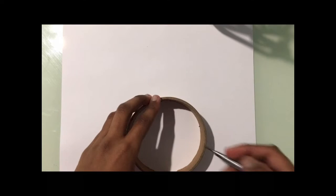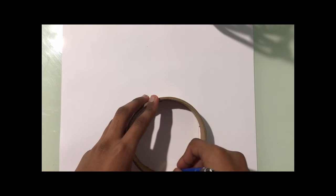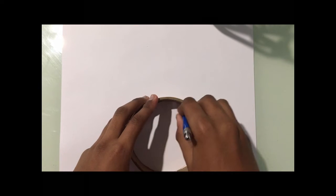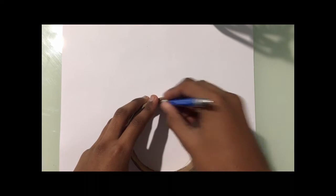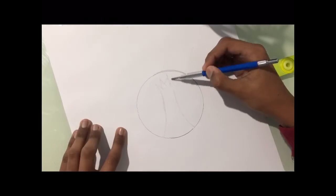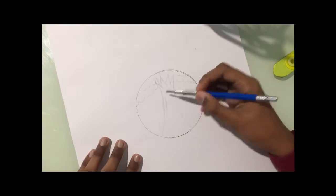Now I'm going to use a circular object to draw a circle so that I can draw the tree inside and all the other details. Now I'm drawing a quick sketch of the tree inside the circle.